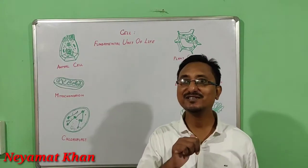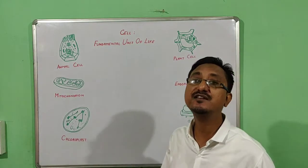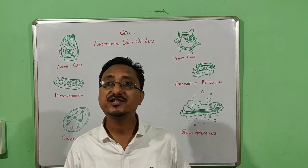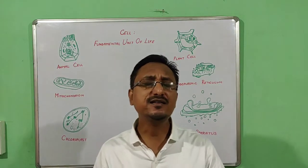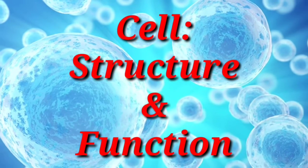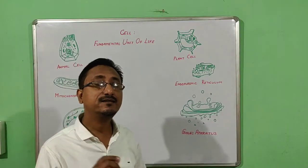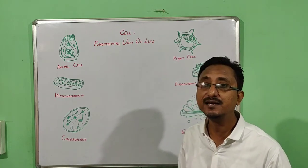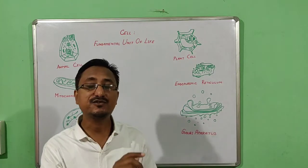Hello children. I am Yamad Khan, once again in front of you with a new video. This time the video is related to Class 9 Science NCERT book, Chapter: Cell — Fundamental Units of Life. In the last session we discussed about cell structure and functions, the parts of the cell, and the similarities and differences between plant cell and animal cell. You can view that video — the link is given in the description.